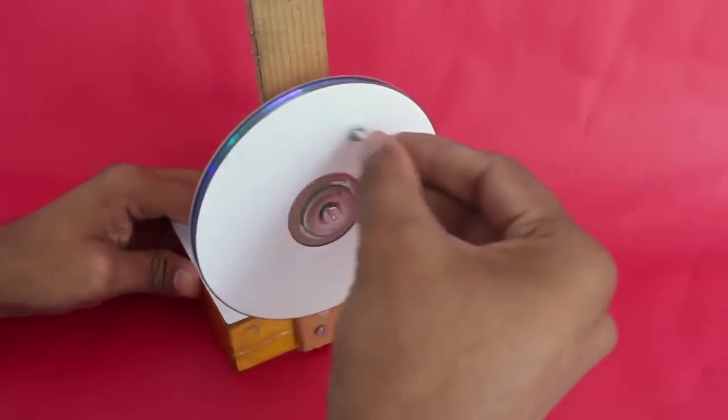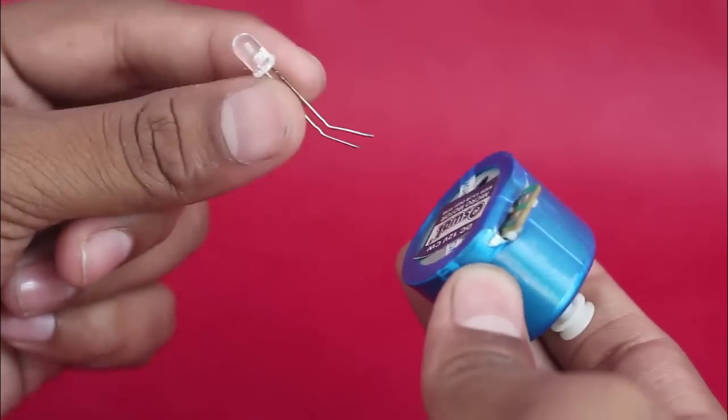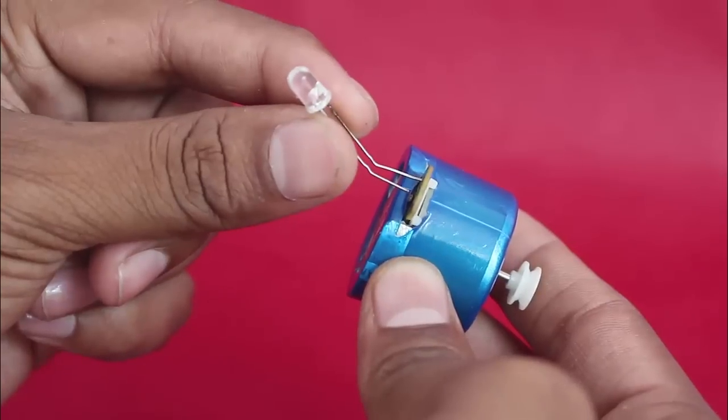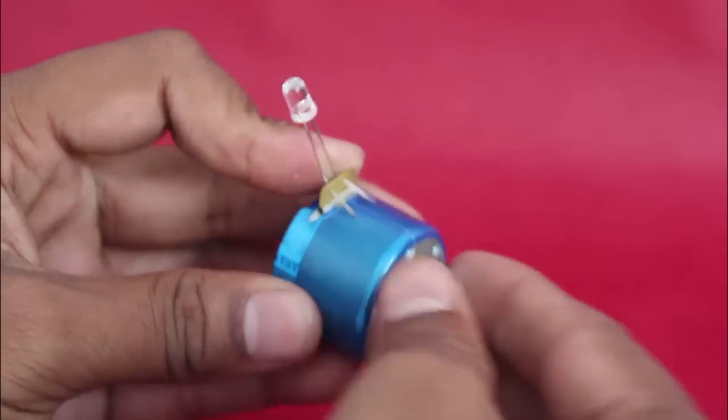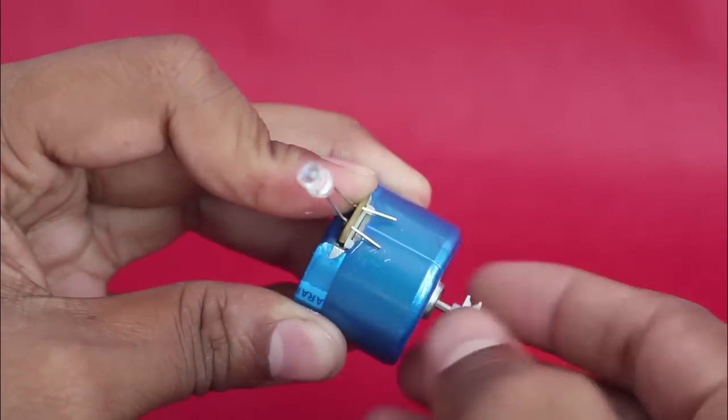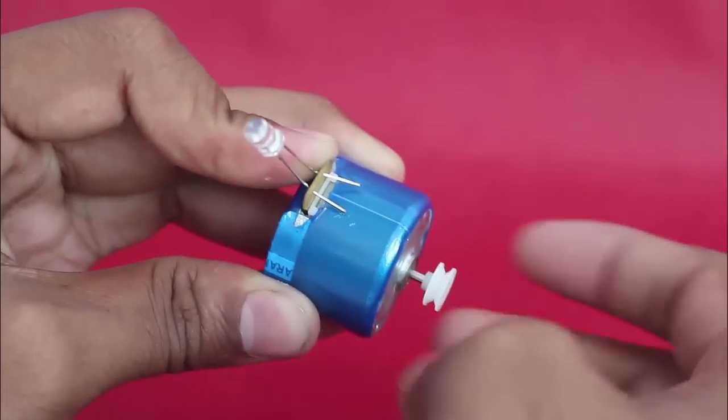Then connect an LED to a 6 volt toy motor. Fix a small pulley on the motor shaft. On spinning the shaft the motor will generate current and the LED will light up.